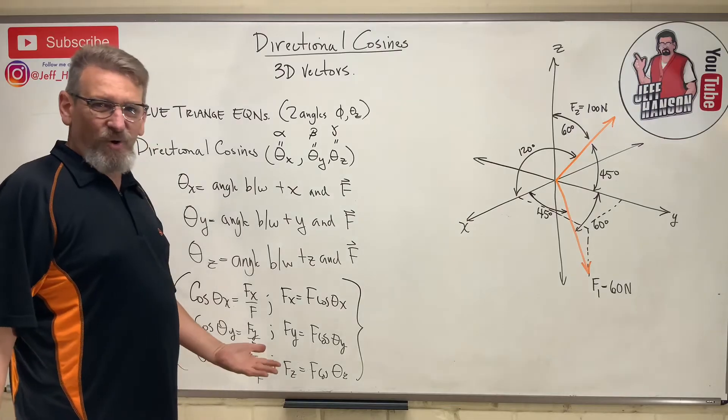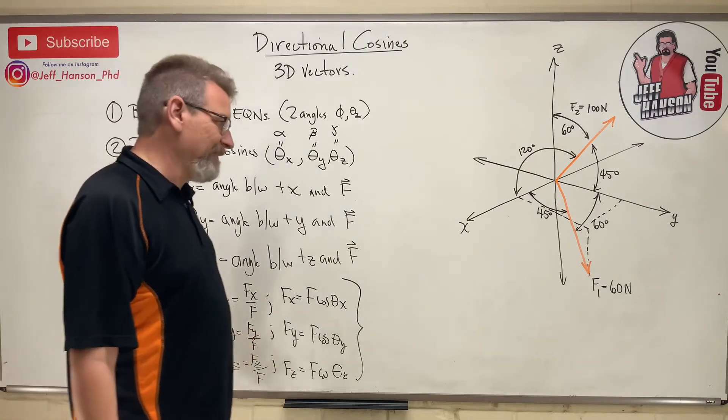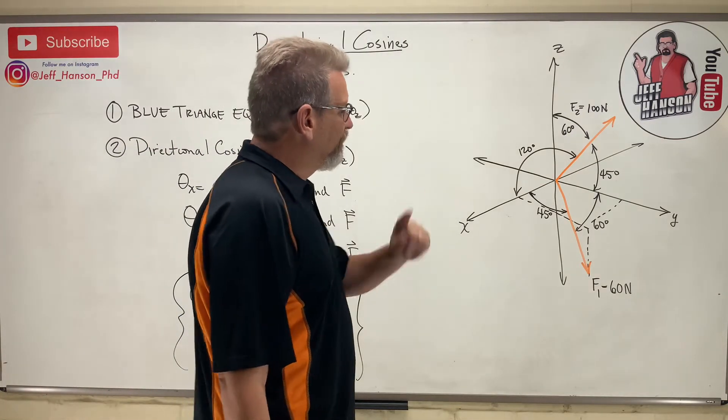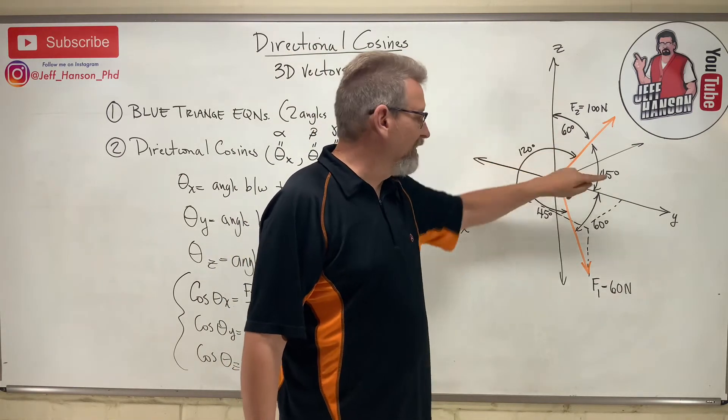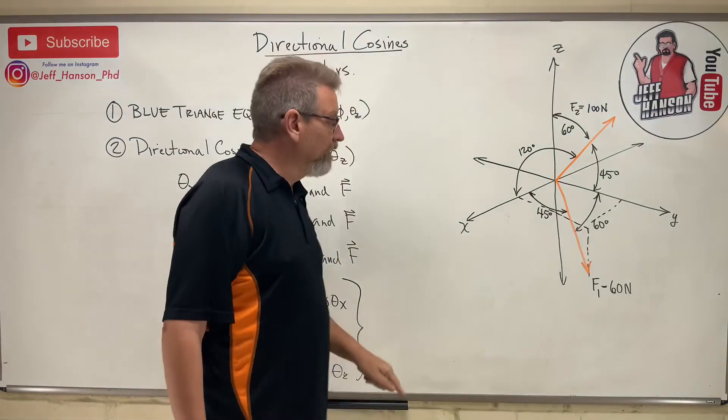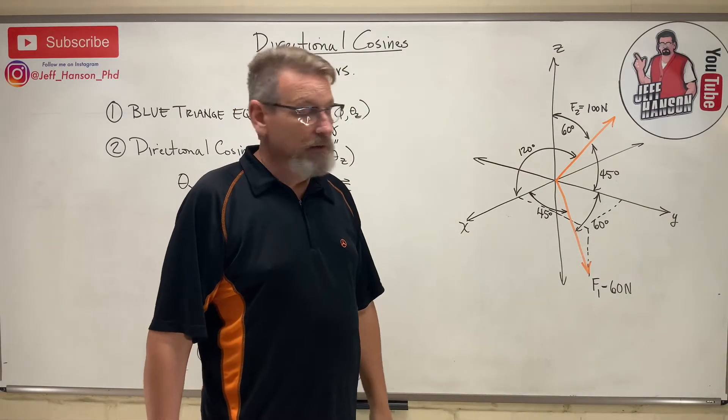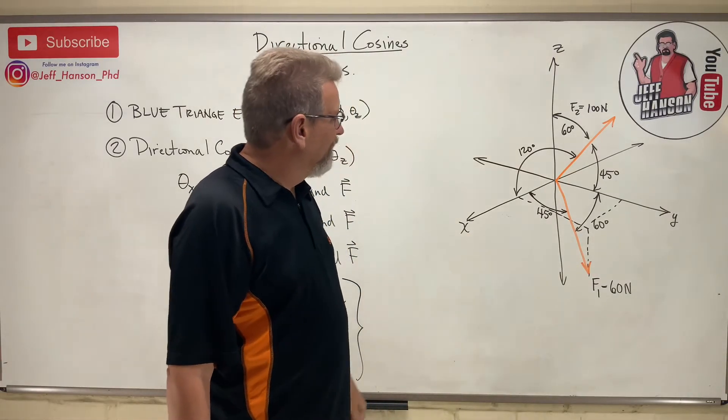So why is this so hard? What's the trick? Tell me, Dr. Hanson, what's the trick? Here's the trick. This one up here is given with all three angles. One, two, three. Gave you x, y, and z. Look at f1 though. They only gave us two.